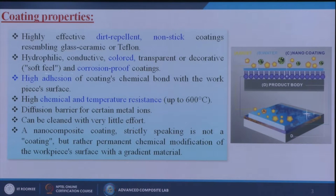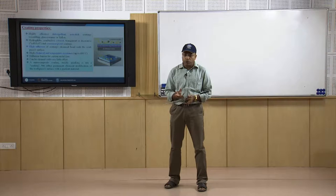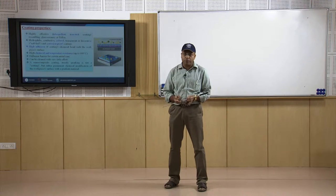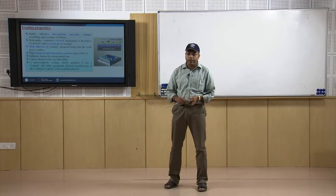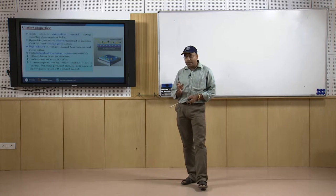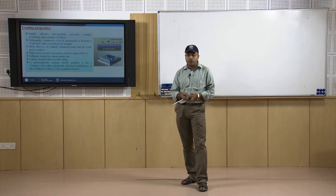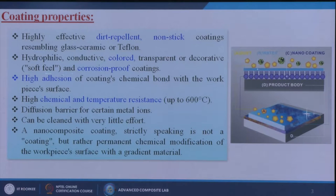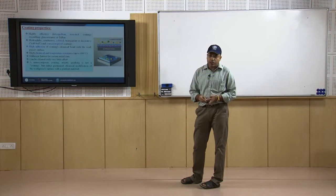First is highly effective dirt repellent or non-stick coatings resembling glass, ceramic, or teflon. In chemical utensils, dust or dirt can stick to glass, ceramic bowls, or micropipettes. By introducing a material onto the glass substrate, dust and dirt particles will not stick to those chemical instruments, reducing the need for frequent cleaning and reducing the cost and time of experimental procedures.